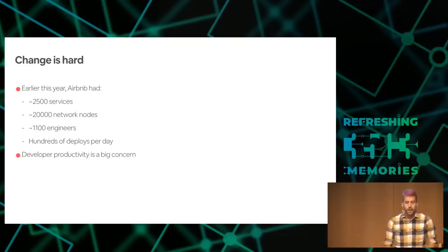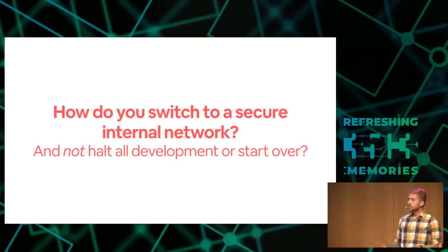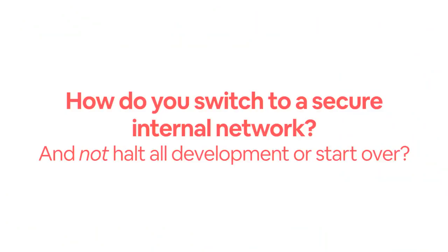The question became: how do we go from a soft-center network to something with good segmentation — the security properties you want — without stopping development, without starting over, and while building security in as the network is running? In the pen testing and offensive community, we hear a lot about being like a ninja — getting into a network and doing stuff without anyone noticing. I'll argue that it's just as important in defensive security: we need to be defensive security ninjas who can sneak in, put in the defenses, and have nobody know we were there.